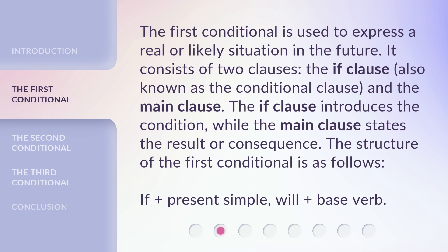The first conditional is used to express a real or likely situation in the future. It consists of two clauses: the IF clause, also known as the conditional clause, and the main clause. The IF clause introduces the condition, while the main clause states the result or consequence. The structure of the first conditional is: if plus present simple, will plus base verb.